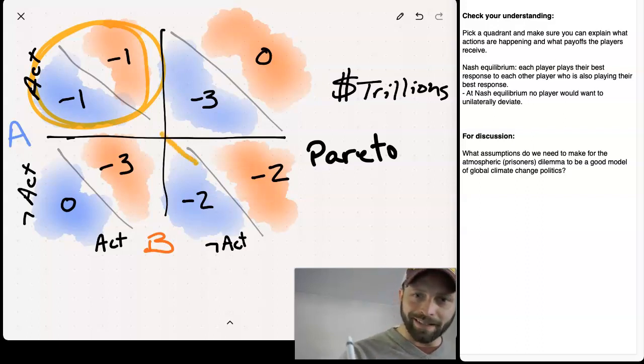Like here, moving in this direction from the Nash equilibrium to that top left-hand quadrant is a Pareto improvement.